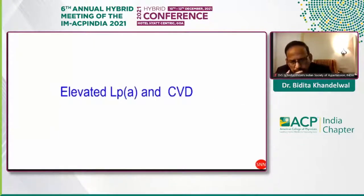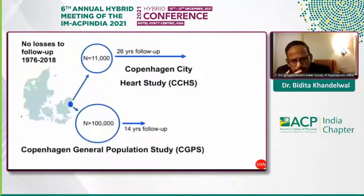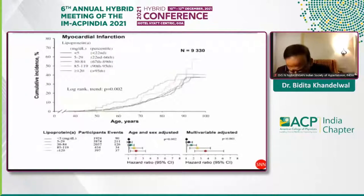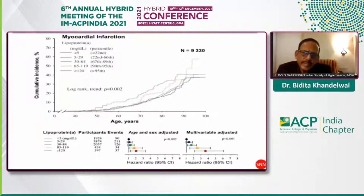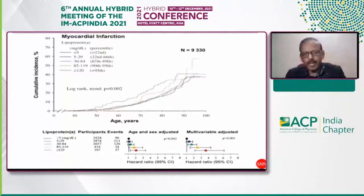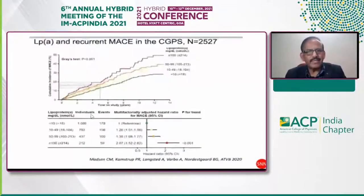Looking at elevated lipoprotein(a) and cardiovascular disease, there are two landmark population-based studies. The Copenhagen City Heart Study involved nearly 11,000 participants with a 26-year follow-up. The Copenhagen General Population Study involved 100,000 persons over 14 years. Both clearly indicated that lipoprotein(a) between the 90th and 95th percentile — that is, 85–119 mg and above 120 mg respectively — had higher cumulative incidence of myocardial infarction compared to levels below 50 mg, even after age, sex, and multivariable adjustment.